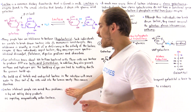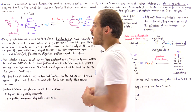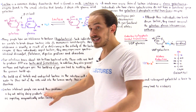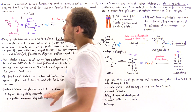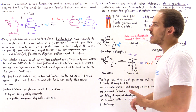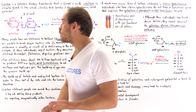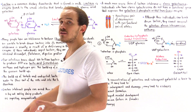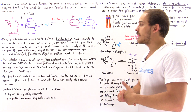Lactose intolerant people can avoid these problems by doing one of two things: by not eating dairy products, because if there is no lactose ingested there will be no lactose buildup in the GI tract; or, as they eat those dairy products containing lactose, they can also ingest enzymatically active lactase enzymes.